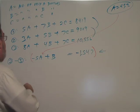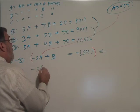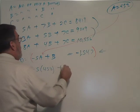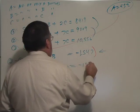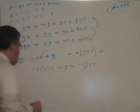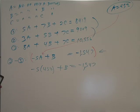All right, so I have minus 5 times 452 plus B equals to minus 1,547. All right, so multiplying that out, I think that's...